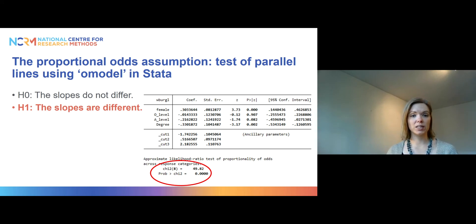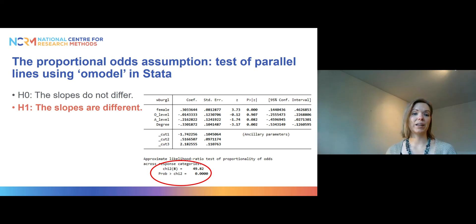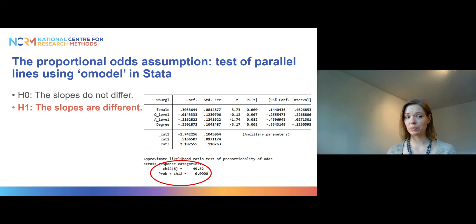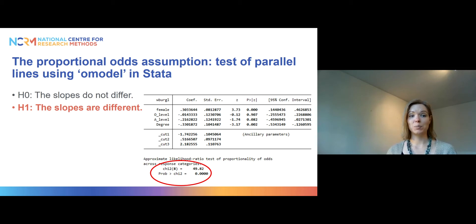The model you can see on this slide is the same as the model from the second video, but what's different here is that now we have the results of the test of parallel lines. You can see that the p-value associated with the test statistic reported on this slide is very small, which means that we do reject the null hypothesis of the slopes not being different. This means that in our model using gender and education as explanatory variables, the assumption of proportional odds was not reasonable.